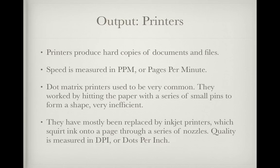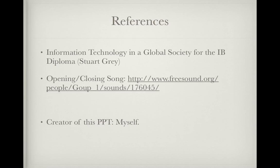Printers produce hard copies of documents and files. Their speed is measured in ppm, or pages per minute. Dot matrix printers were once very common — they work by hitting the paper with a series of small pins to form a shape, which is very inefficient. They have mostly been replaced by inkjet printers, which squirt ink onto a page through a series of nozzles. Quality is measured in dpi, or dots per inch. Inkjet printers are now being replaced by laser printers, which are the most modern version.